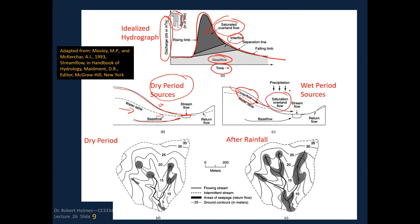During the wet period, interflow is water above the water table that gets in and moves through the system and comes out. Then it becomes saturated overland flow. If you're hiking in spring, you'll notice marshy areas even on a hillside — those are seeps where water disappears upstream but reappears as interflow. I encourage you to look at the references in the lecture for more detail.